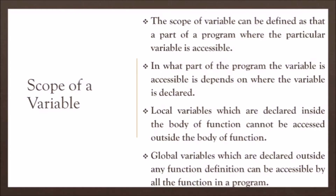Let us start from scope. The scope of a variable can be defined as the part of a program where the particular variable is accessible. In what part of the program the variable is accessible depends on where the variable is declared — whether it will be declared globally or declared locally.